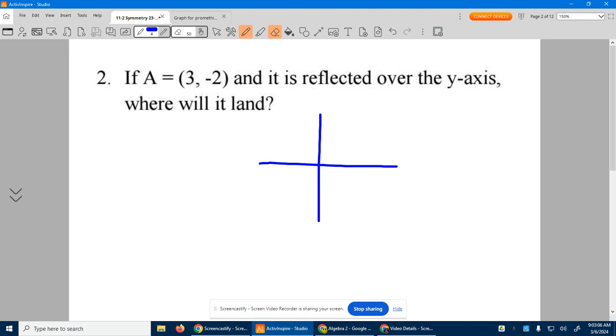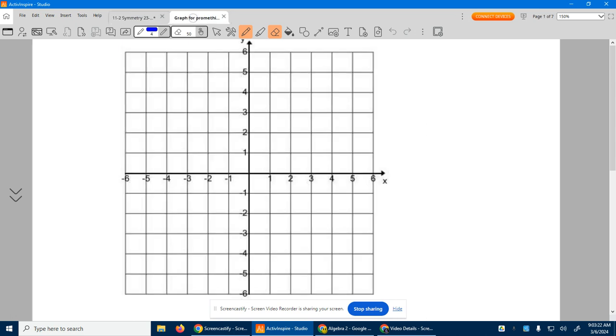You need to be able to look at this. A is at (3, -2)—over three, down at negative two—so A is right here. We are going to reflect it over the y-axis, so it's going to flip over here.